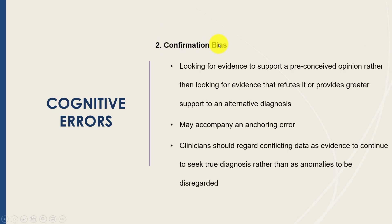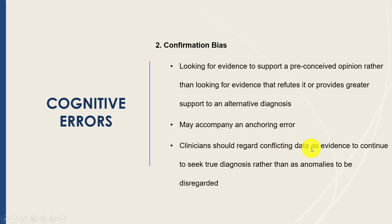Another cognitive bias is confirmation bias, somewhat similar to anchoring but with distinct features. This is where you look for evidence specifically to support a preconceived opinion rather than objectively exploring your full differential diagnosis. As a clinician, when conflicting data comes in, it's important not to select only the information that confirms your preconceived opinion and downplay information that doesn't fit. You can see how anchoring and confirmation bias work together in the pancreatitis-versus-cardiac-event example.